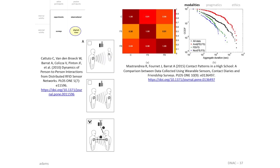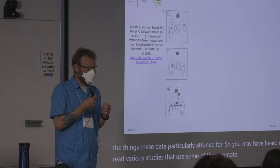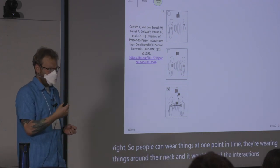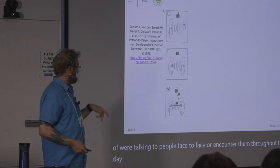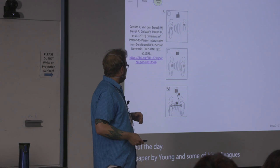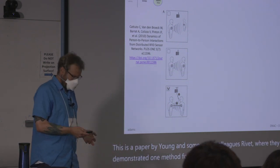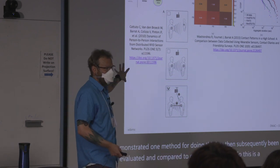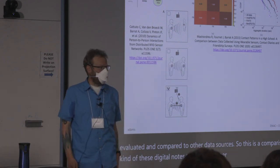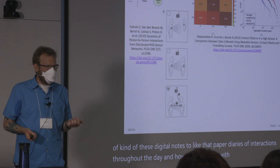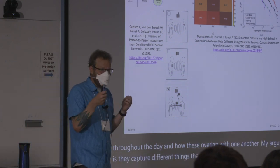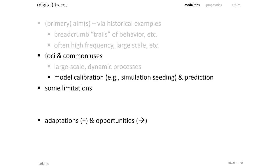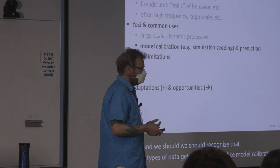You may have heard of studies using remote sensors — people wearing things around their necks recording interactions as they talk to people face to face throughout the day. A paper by Alessandro Vespignani and colleagues demonstrated one method for doing this, which has subsequently been evaluated and compared to other data sources. This is a comparison of digital sensors versus paper diaries of interactions throughout the day. My argument is they capture different things that are overlapping — they aren't meant to capture the exact same thing, and we should recognize that.